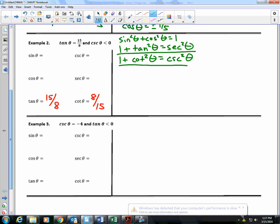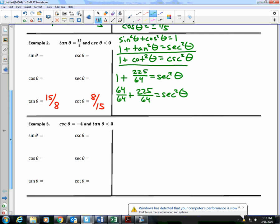So, 1 plus I'm going to square tangent. What's 15 squared? 225 over 64 is equal to secant squared of theta. So, instead of writing 1, I'll write it as a fraction with a common denominator. So, what should I have? 64 over 64 plus 225 over 64 is equal to secant squared of theta. 64 plus 225. 289 over 64.